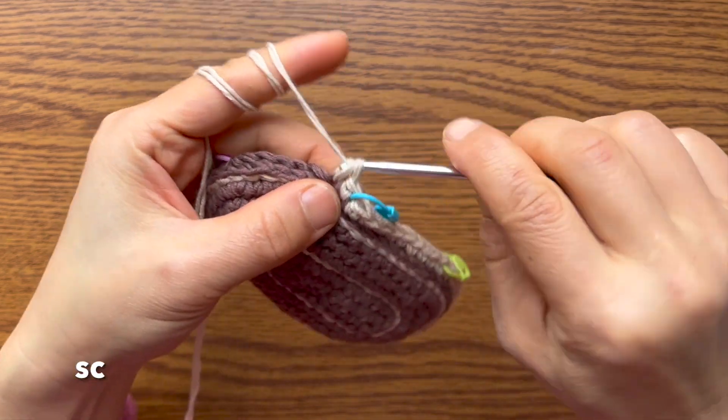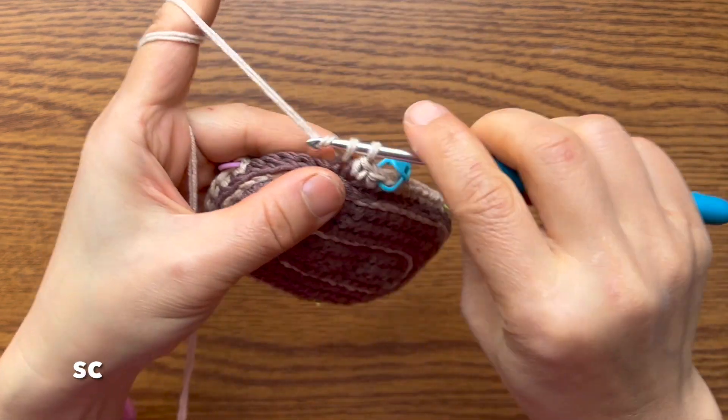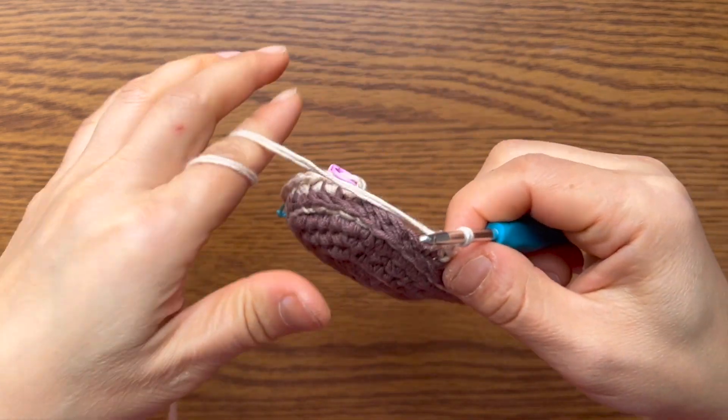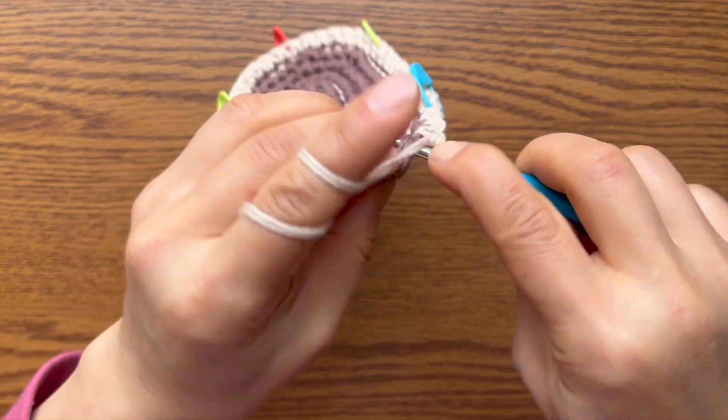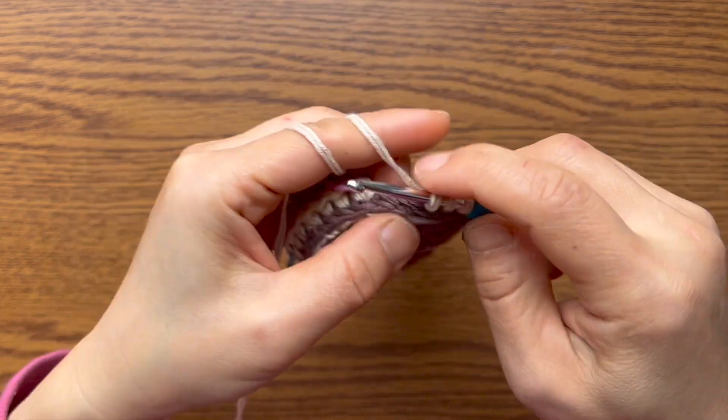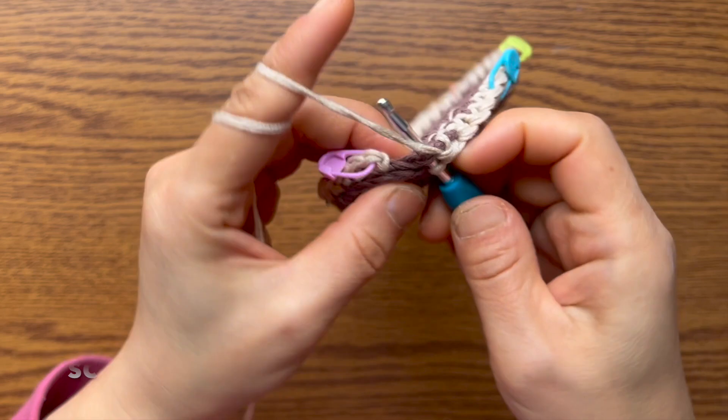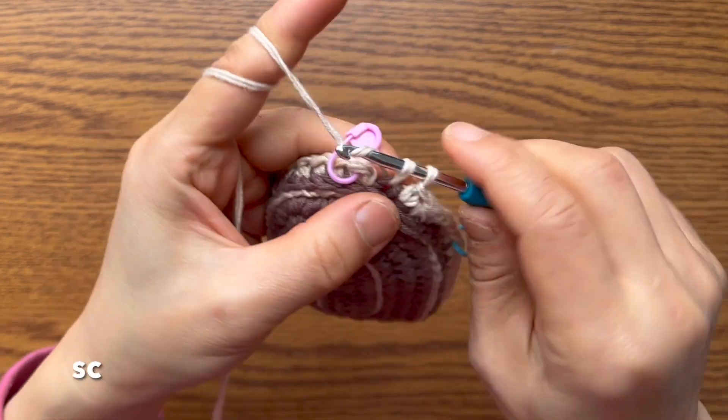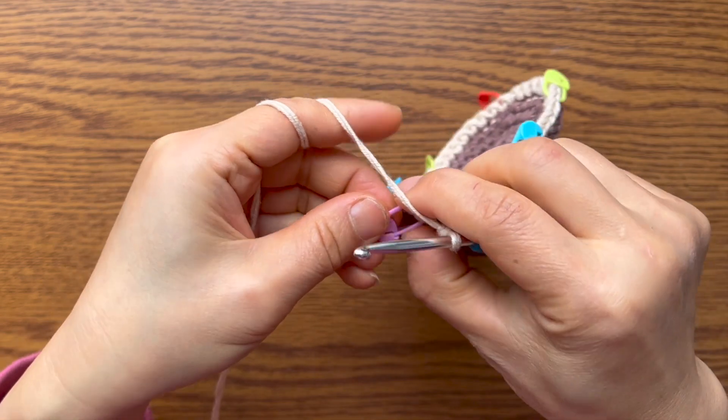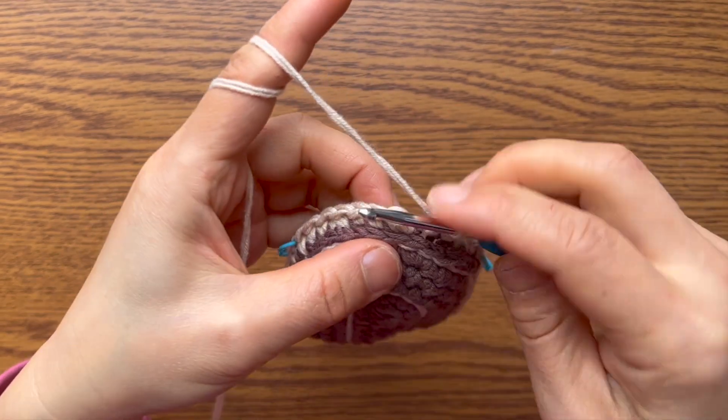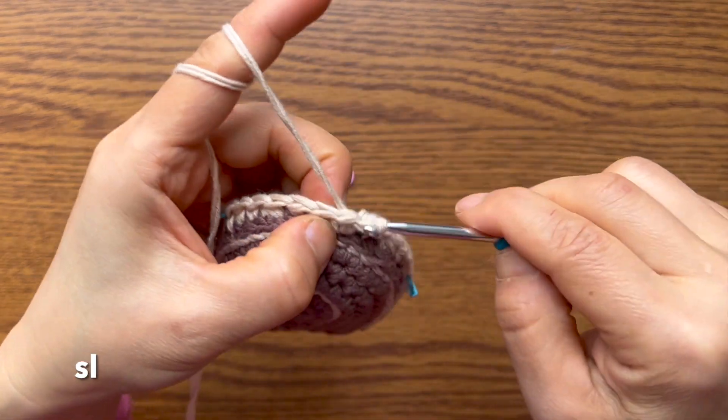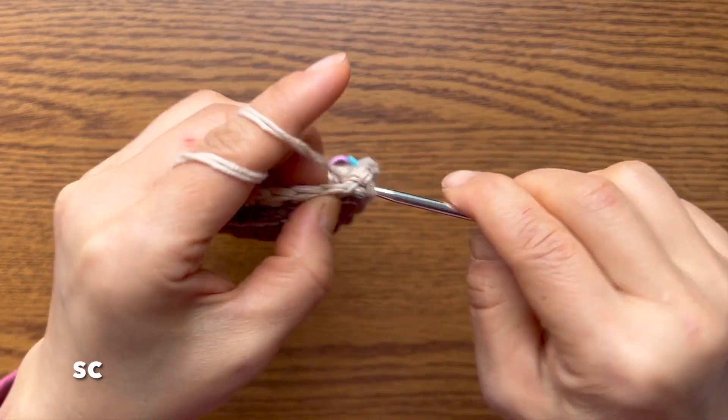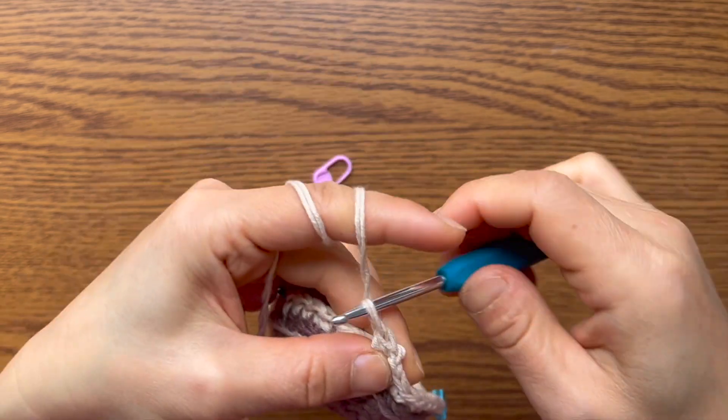Three single crochets. We want to decrease on this side too. Decrease one stitch. Then two single crochets to the marker. Slip stitch, chain one, single crochet in the same space. This way we finish the first round.